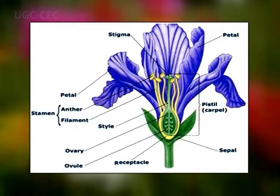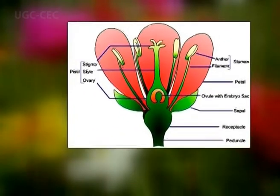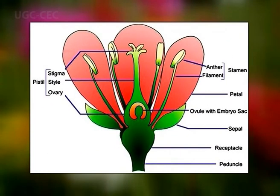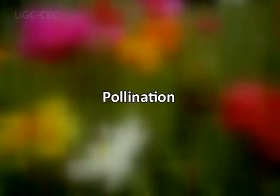Stamens constitute the male reproductive part, collectively termed the androecium. Each stamen possesses a long filament and an anther that contains the pollen grains. The female reproductive organs are called carpels, collectively termed the gynoecium. Each carpel consists of an upper stigma, a middle stalk (style), and a lower swollen ovary.